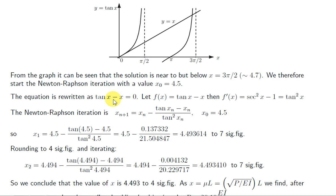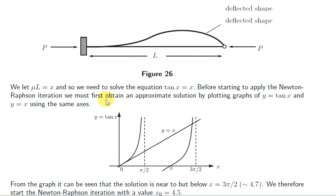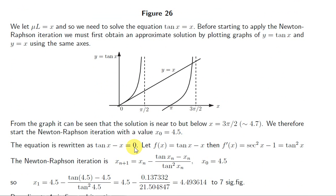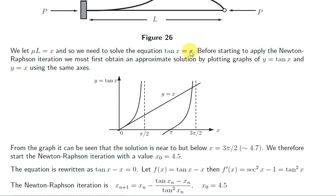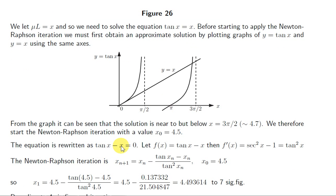Now, for the Newton-Raphson method, we need a function of the form f of x equals 0. So remember, we're solving the equation tan of x equals x, but we can rewrite that as tan of x minus x equals 0. So tan of x minus x is our f of x.